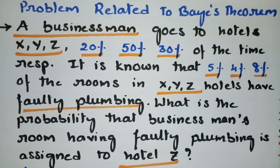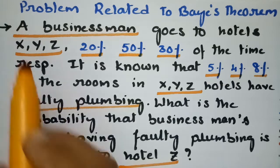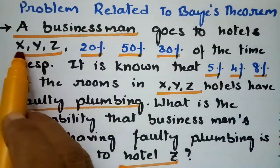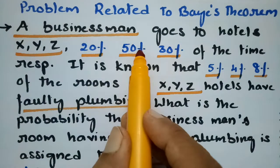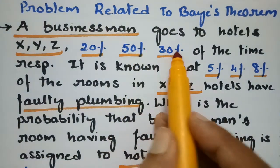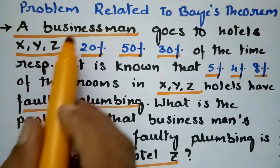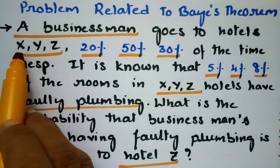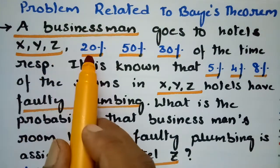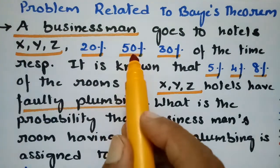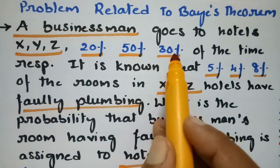This problem is related to Bayes' theorem and we are going to use Bayes' theorem in order to solve this problem. A businessman goes to hotels X, Y, Z 20 percent, 50 percent, 30 percent of the time respectively. So the businessman spends time in hotel X for 20 percent, hotel Y 50 percent, and hotel Z 30 percent.